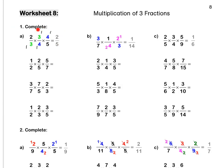Press pause to complete question A. Question B: we simplify by dividing our 3 and our 3. We divide 2 and 4 both by 2 to get 1 and 2. And we multiply out to get 1 over 14. Press pause to complete question B.